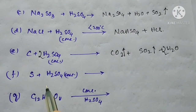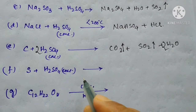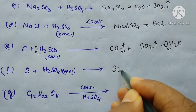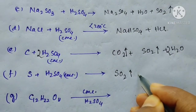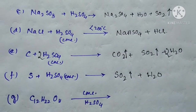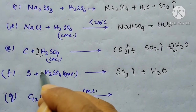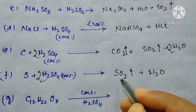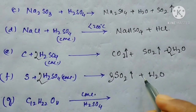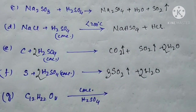Next, sulfur plus concentrated sulfuric acid will produce sulfur dioxide as gas and water. For balancing, the coefficient 2 is required over the sulfuric acid, and 3 for sulfur dioxide, and 2 for water. Now it is balanced.